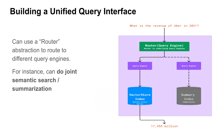That's where the Router Query Engine is helpful. It routes the user query to a specific query engine or index. For example, 'What is the revenue of Uber in 2021?' can be answered using the vector store index by fetching specific context. But a query like 'Summarize the document' needs to go through the whole document and use the summary index. The Router Query Engine internally uses an LLM to route the query to the appropriate engine.